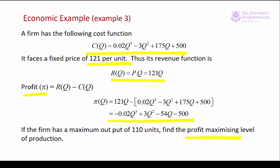Other important information we have is that the maximum output of our firm is 110 units. That tells us the domain of our profit function. So the domain for π is the closed interval 0 to 110.